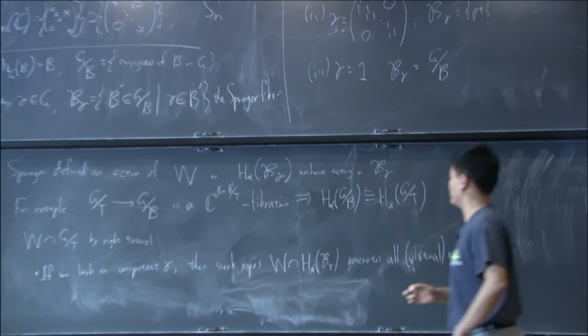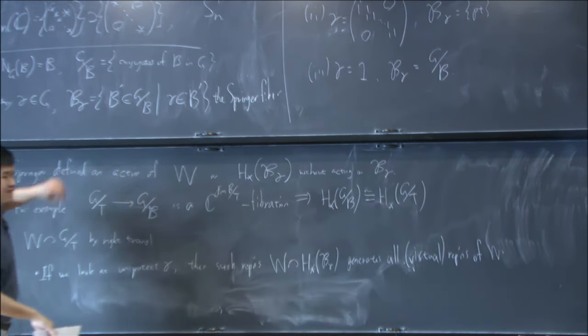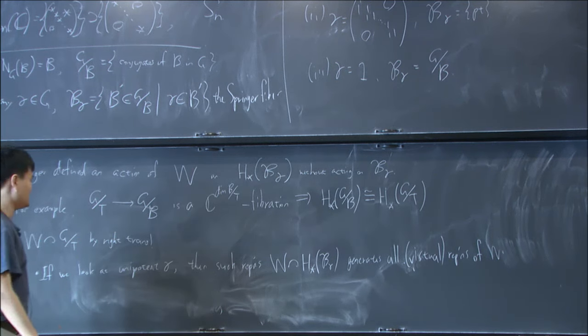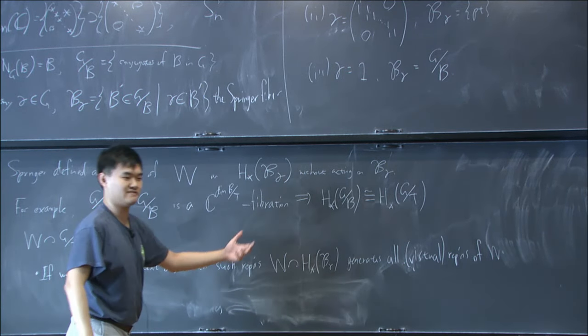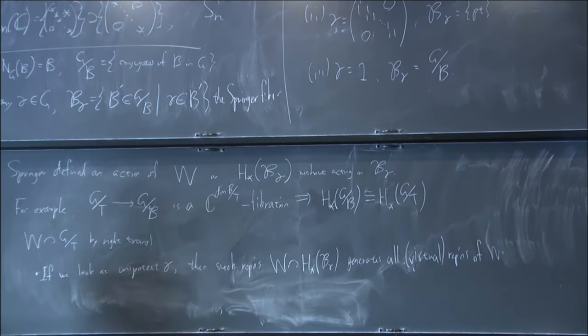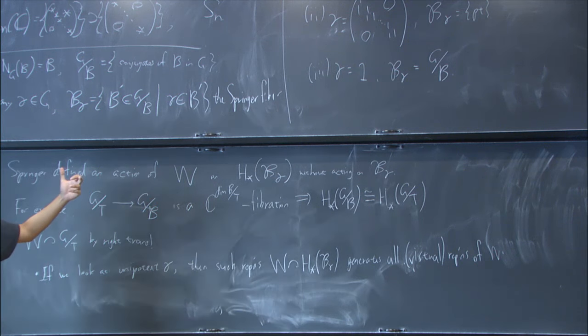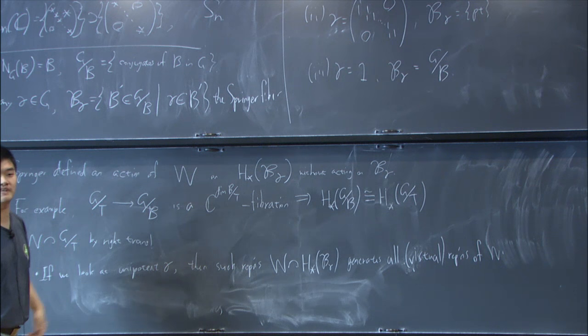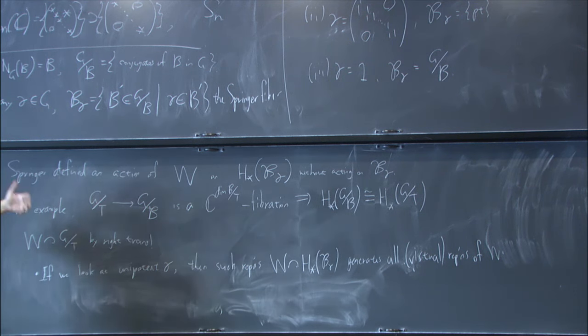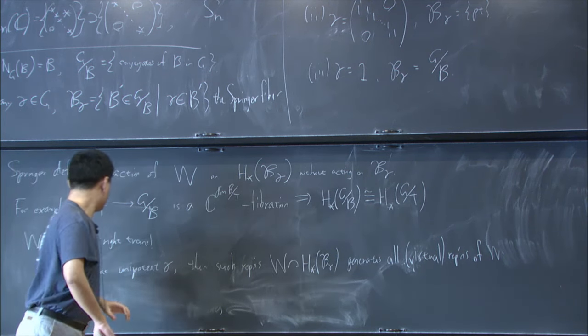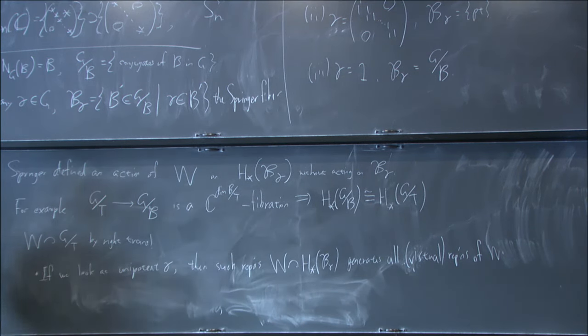of the Weyl group as a finite group generate all representations as virtual representations. So for example, when G is GL_N, then the Weyl group is S_N. And representation of S_N can be indexed by partitions of N. On the other hand, unipotent matrices of size N can be indexed by Jordan canonical form by partitions of N as well. And it's indeed matched that way. So that's what we are given by Springer.